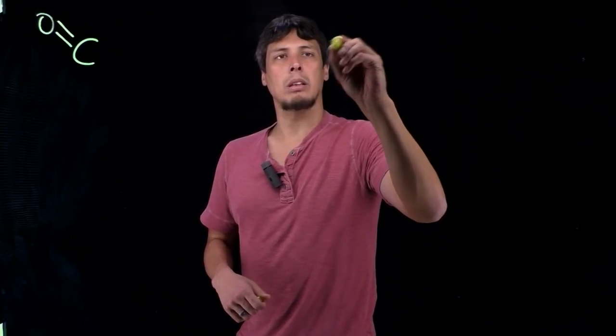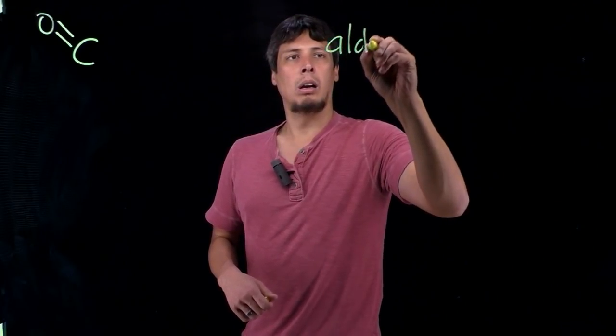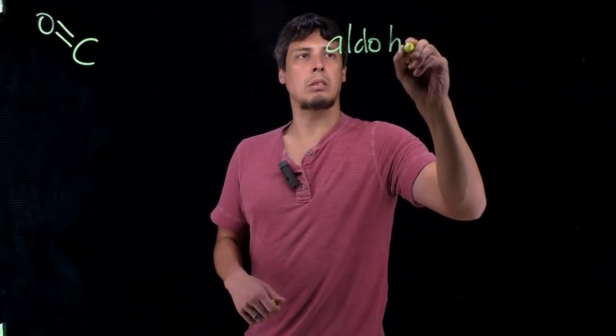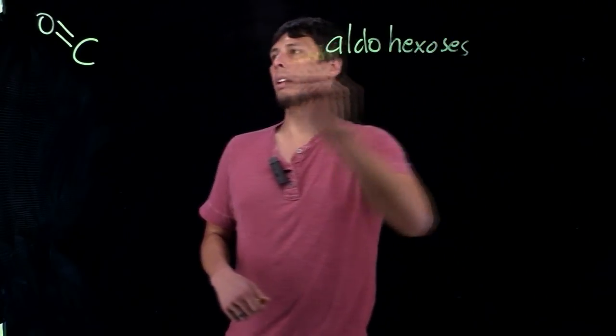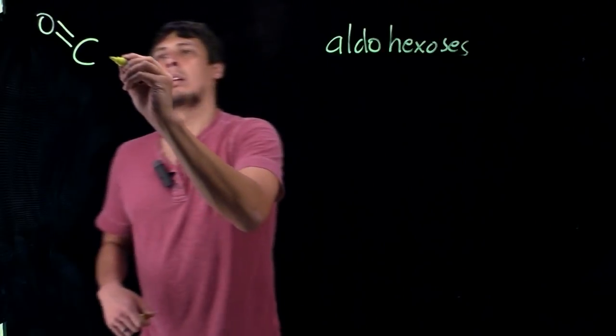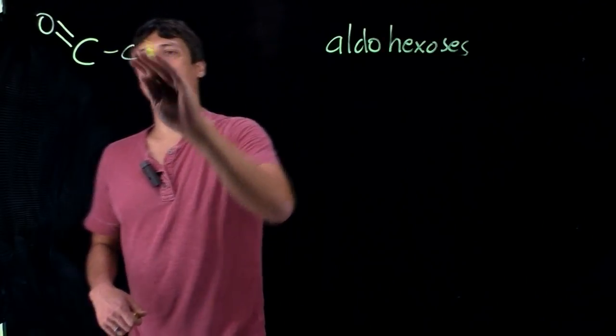Collectively you can classify both of these as aldohexoses because they're going to have the aldehyde group here and then they're going to have six carbons.